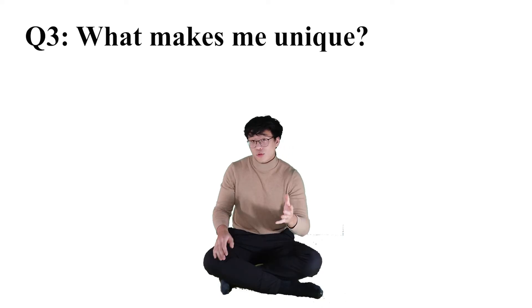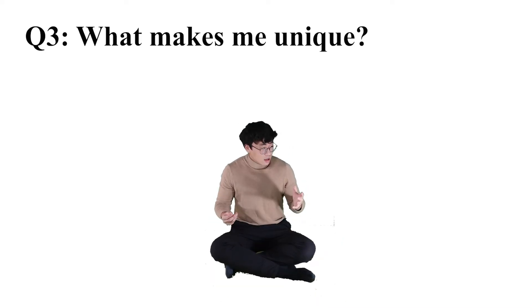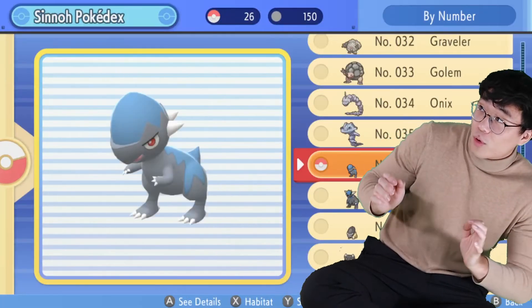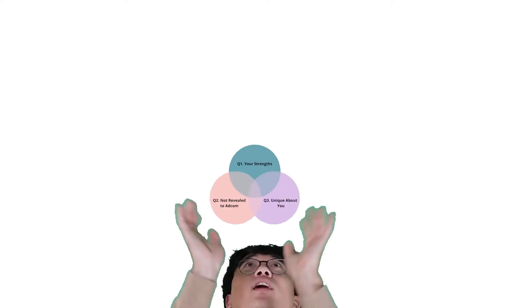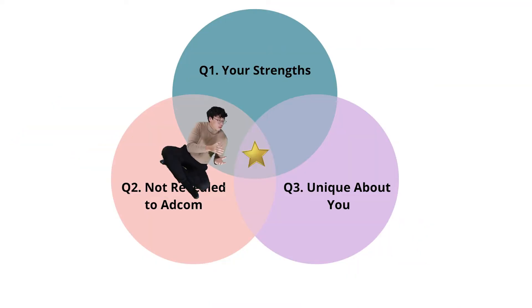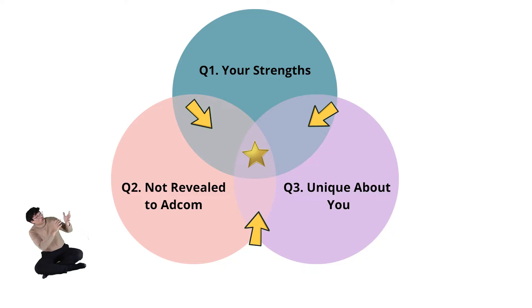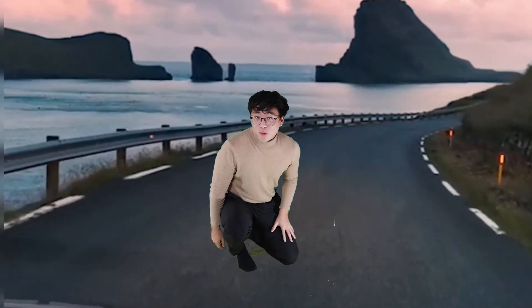And third: what makes me unique? You have to show some personality — this is an advertisement of your character. If you really like crypto and NFTs, show them your mining rig. If you're into Pokémon, show them your completed Pokédex and all your Pokémon. Now organize your information in a Venn diagram, and what you see in the middle is going to be the star of your content. If there's nothing in the middle, don't fret — just go with the activities that overlap the most categories. At this point, your content should be amazing.